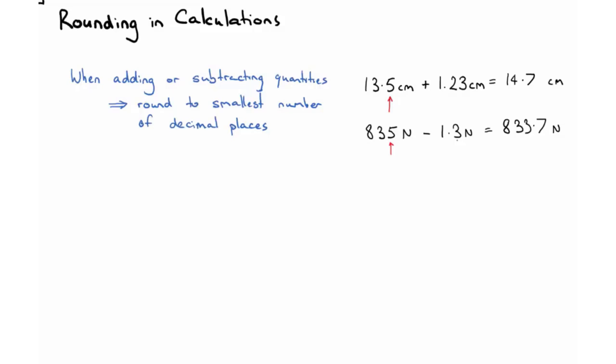So when we subtract the 1.3 from the 835, we can only know this final answer to this decimal place here or this unit here. And so what we'd need to do is round that up to 834 newtons.